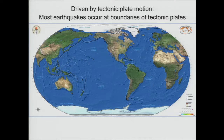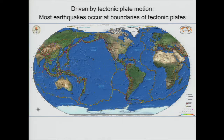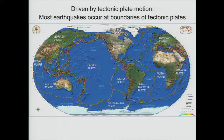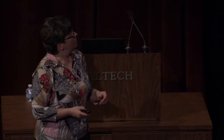We know that earthquakes are caused by the motion of tectonic plates. If you start with the world map and put recent events on it, we see that they cluster and outline plates that cover the Earth's surface and constantly move relative to each other at very slow rates. They are actually like an eggshell in terms of their relation to the Earth — very thin, yet still several tens of miles in many places.